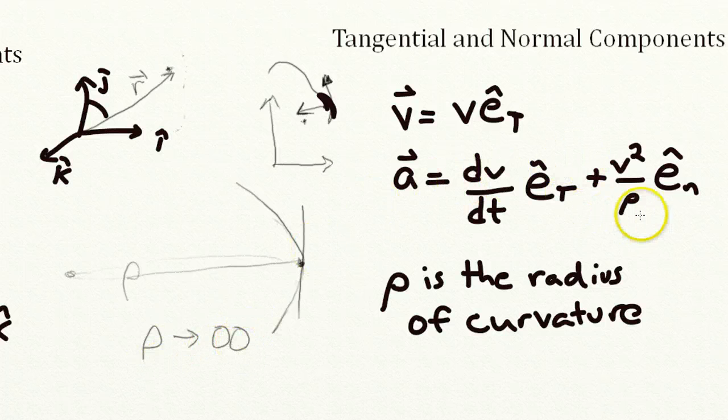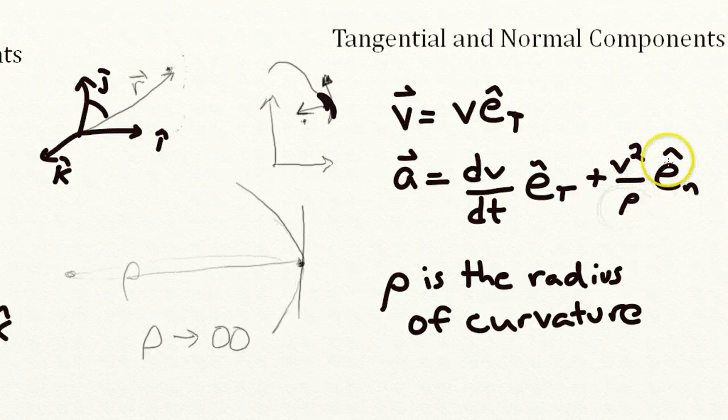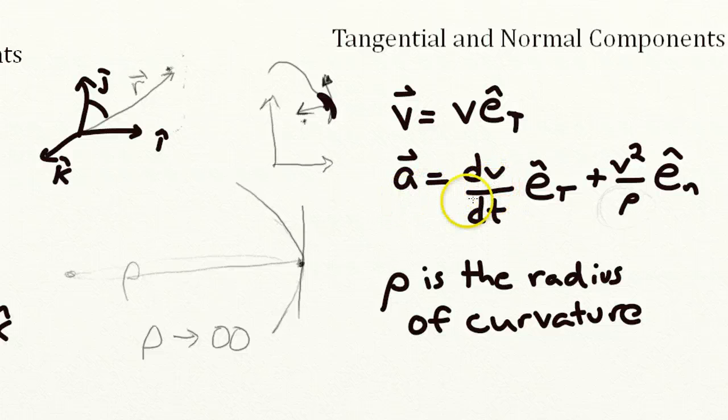So what happens when rho is infinite? Well, let's look back here. In the limit that this goes to infinity, this term goes to zero. And a is just dv/dt. So just as we've done before motion in a straight line, you will just have the acceleration is equal to the time derivative of the velocity.